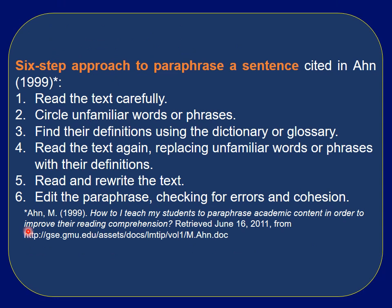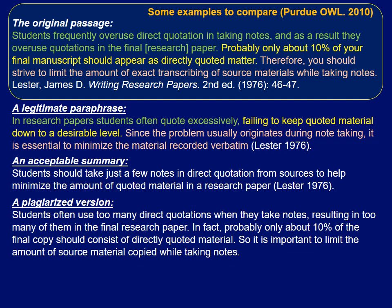According to Ann (1999), there is a six-step approach to paraphrase a sentence: first, read the text carefully; second, circle unfamiliar words or phrases; third, find their definitions using a dictionary or glossary; fourth, read the text again replacing unfamiliar words or phrases with their definitions; fifth, read and rewrite the text; and finally, edit the paraphrase checking for errors and cohesion. There is also an example of a paraphrase showing the original text highlighted in sentences.